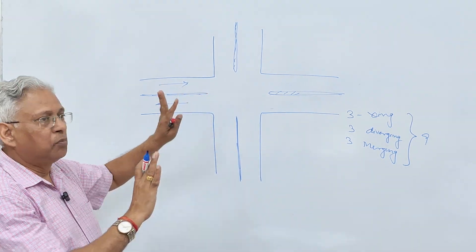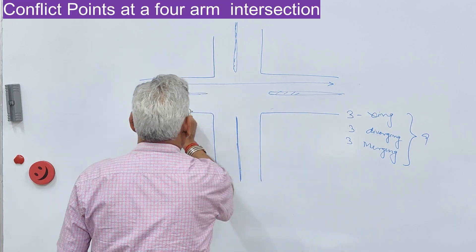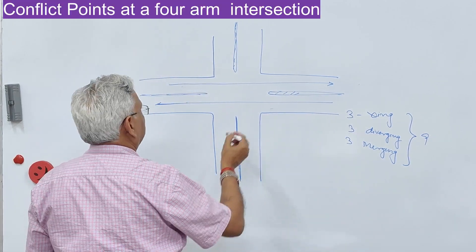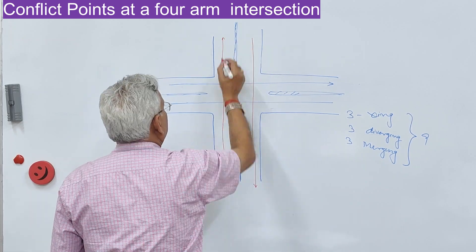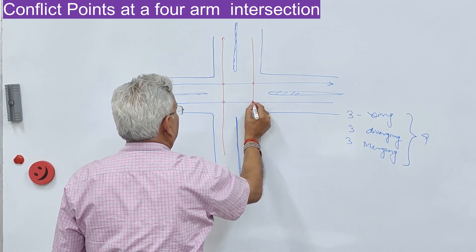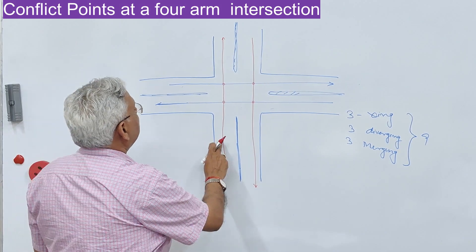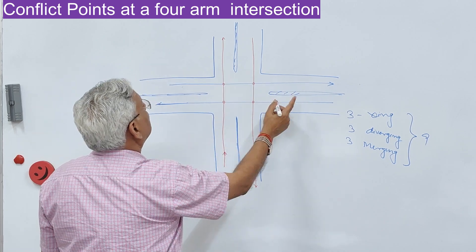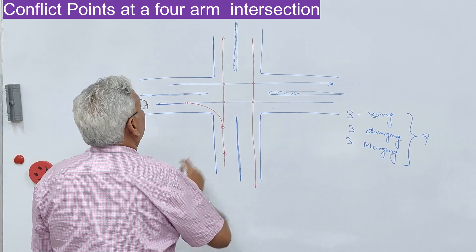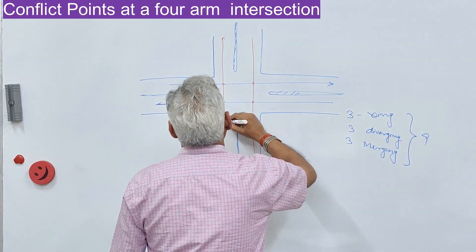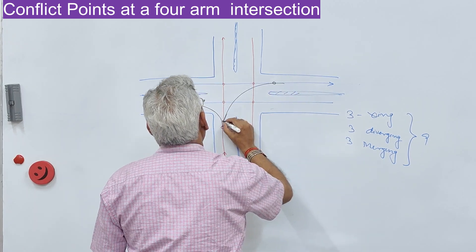For a four-leg intersection where both streets are two-way, you have through movements crossing each other. There are four points of crossing which are at 90 degrees. Now, a vehicle coming from one direction can go either left or right. If it goes left, it merges — that is one point. If it goes right, it results in a merging point and a diverging point.